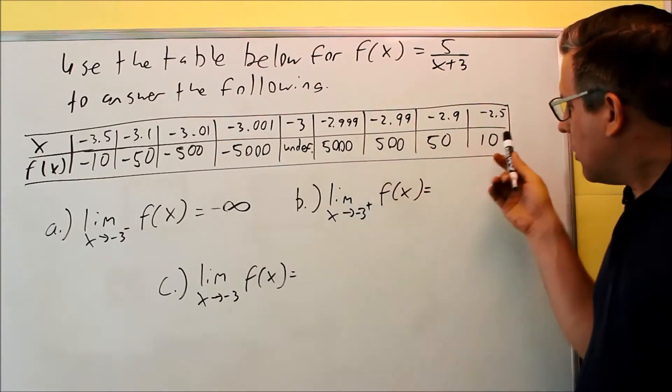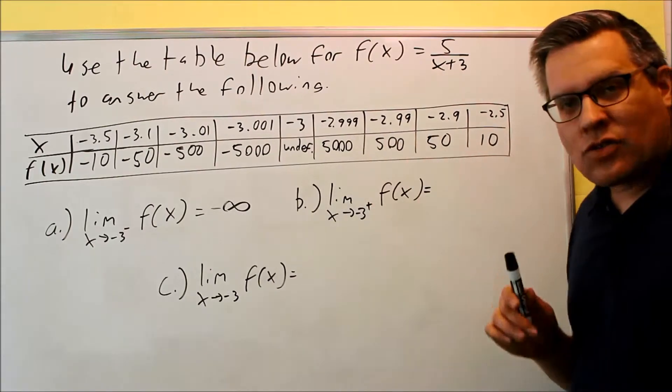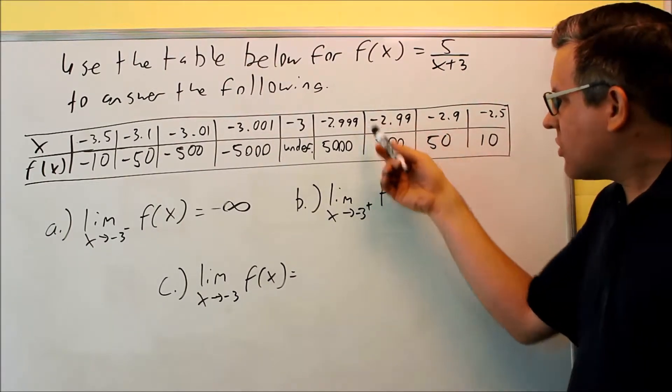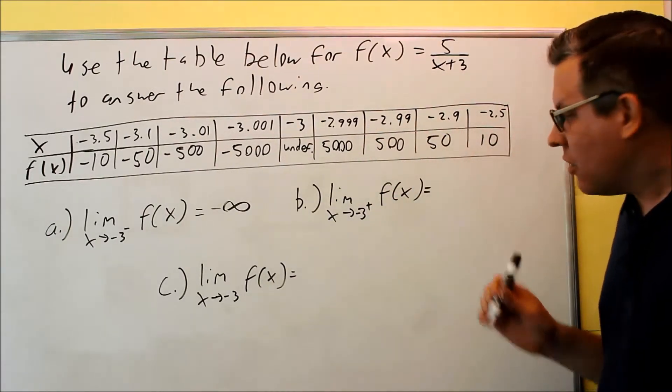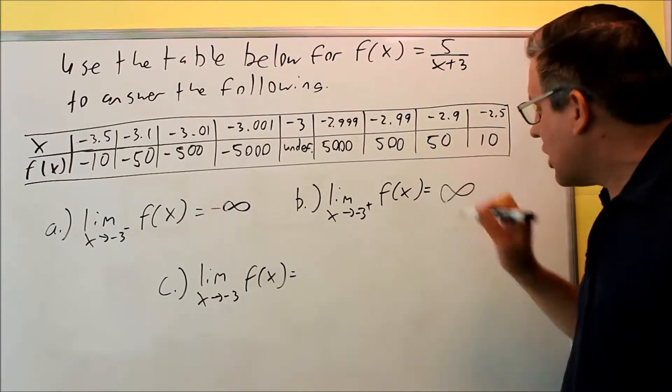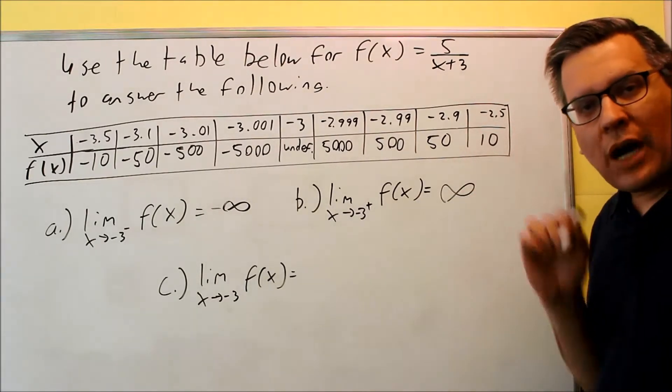50, 500, 5,000. Again, as you add more 9s, that's just going to add more 0s in the end. So we can say from the table that this is going to be going to positive infinity.